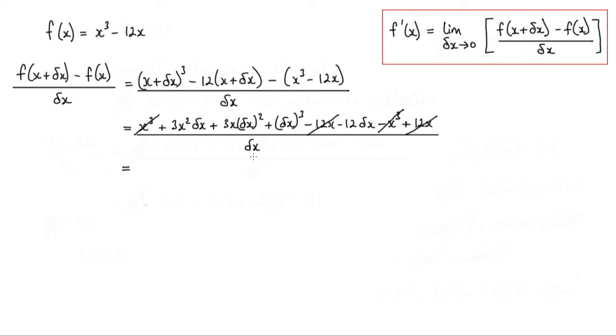The next thing we can cancel are the delta x's. So the one from the bottom will cancel with this one, and also with one of these, and also with one of these, and this one here as well. So what I'm left with is 3x squared plus 3x delta x plus delta x squared minus 12.